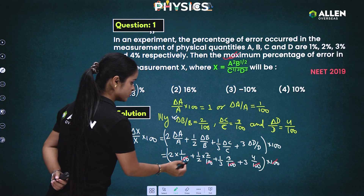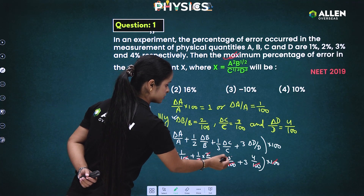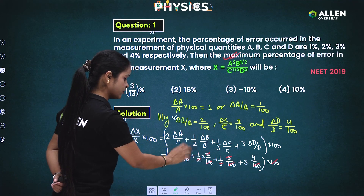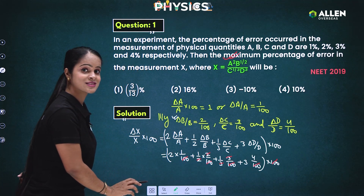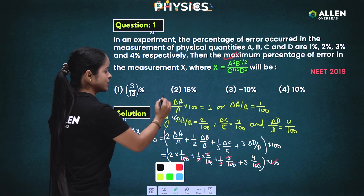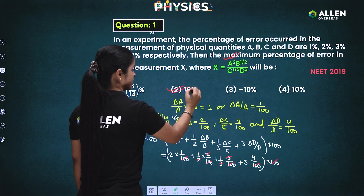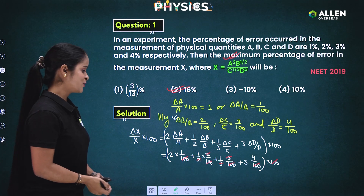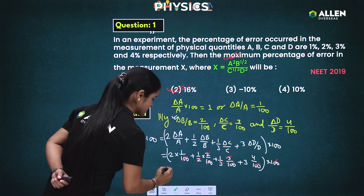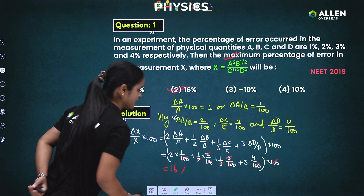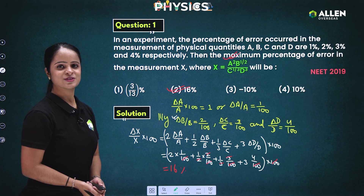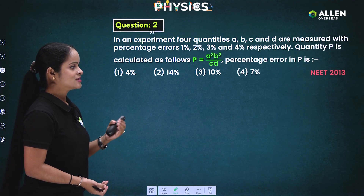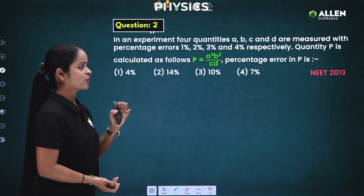Calculating: 2 plus 1 is 3; 3 plus 1 is 4... wait — 2 plus 1 equals 3, plus 1 equals 4 — actually: 12 plus 1 equals 13, plus 1 equals 14, plus 2 equals 16. So the answer is 16%, which is option number 2. So let's move to the next slide with a direct question from NEET 2013.